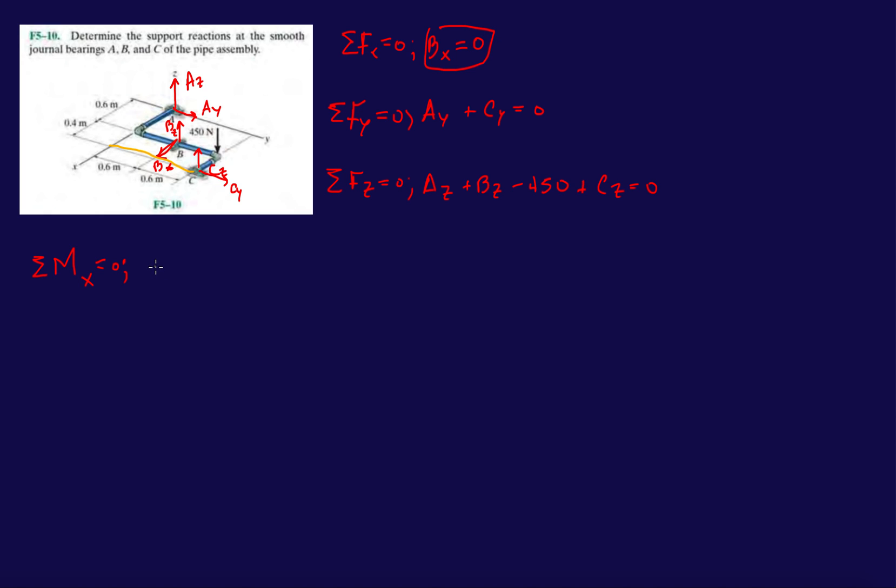So let's do: B_z will make it rotate positive, so B_z times 0.6. Then we have C_z. And then last but not least we have 450, so minus 450 times 1.2 equals 0. All right, so we can't really do much with that one.